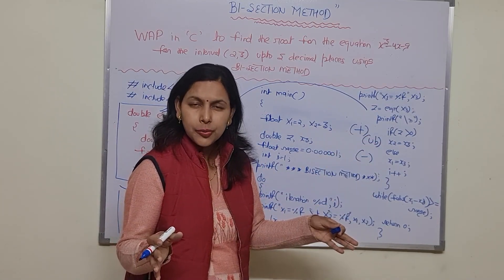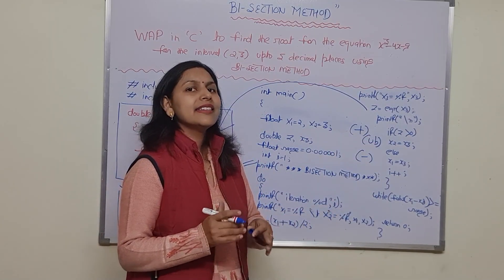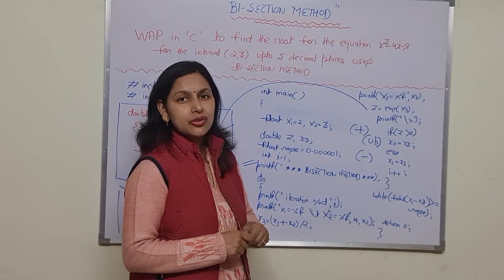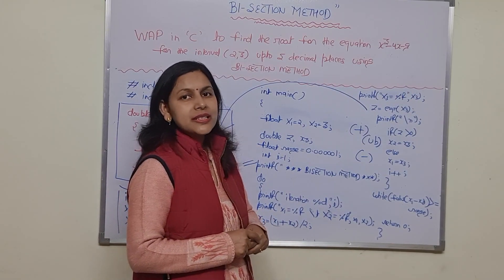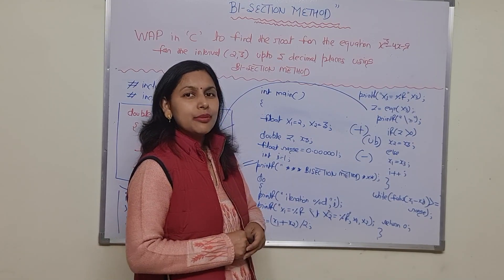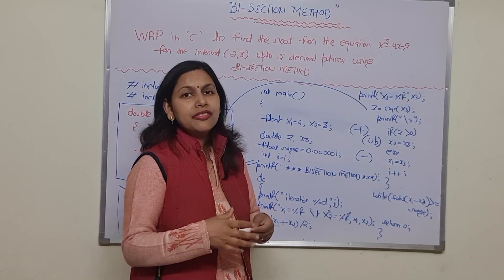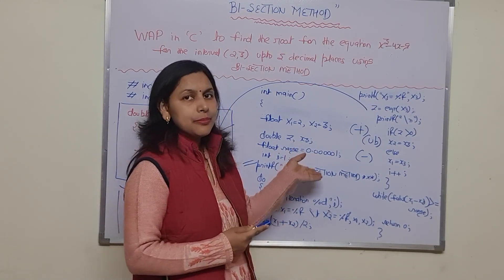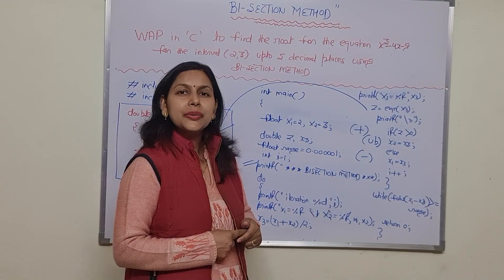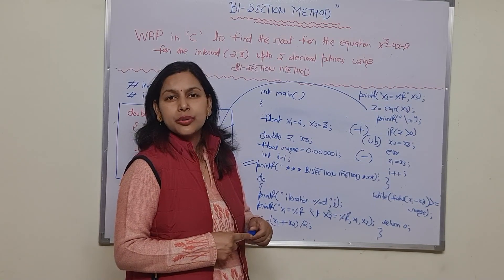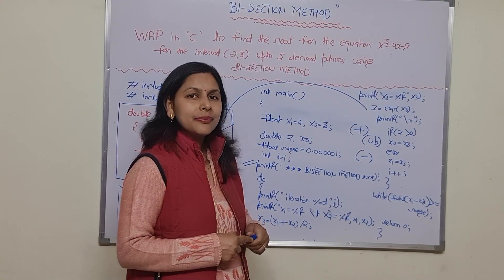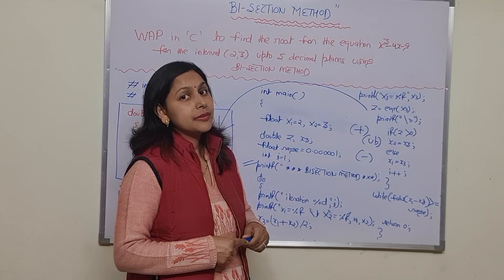After the loop, the total number of iterations and the final approximate root are printed to the screen. You should try writing this C program on your own system, compile it, and find the approximate root using the bisection method.